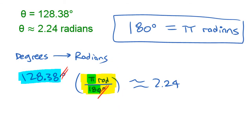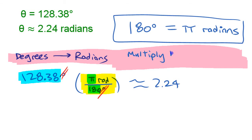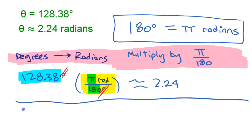To summarize: to change degrees to radians, multiply by pi over 180. Now let's go the other way — radians to degrees.